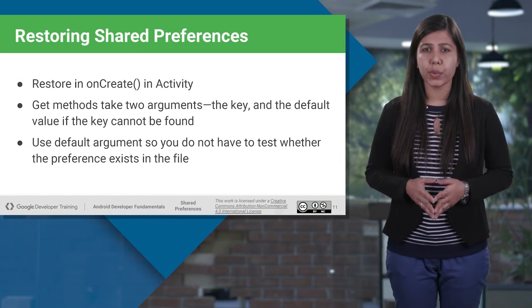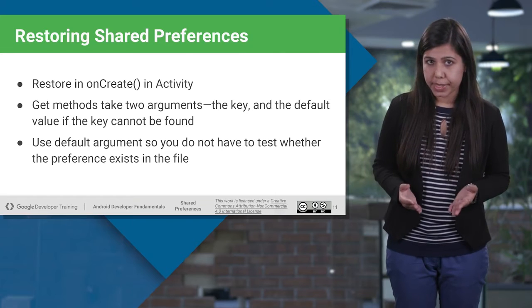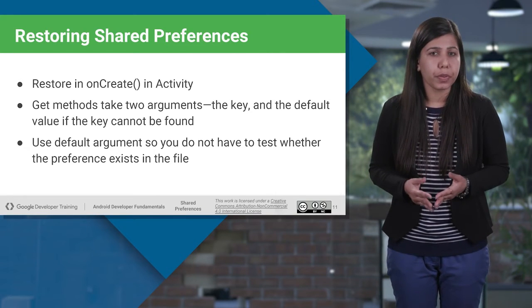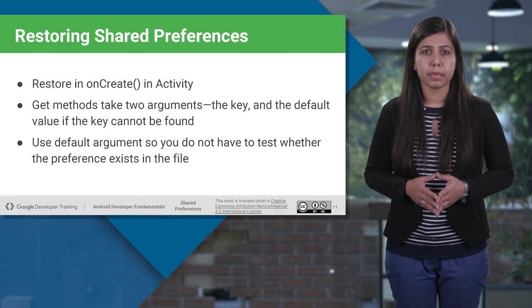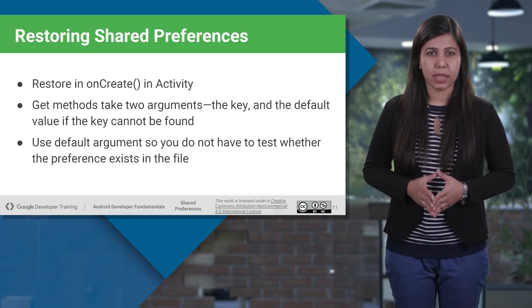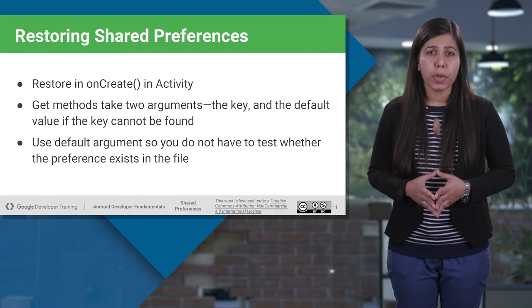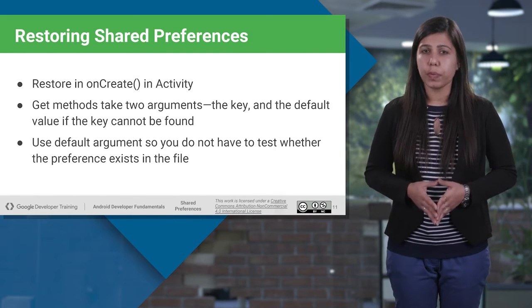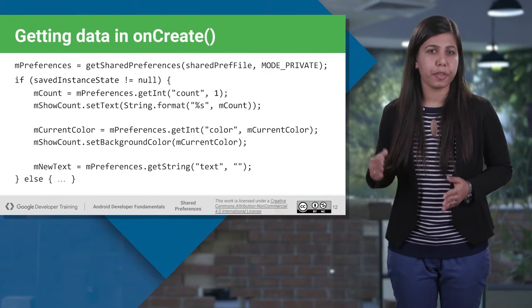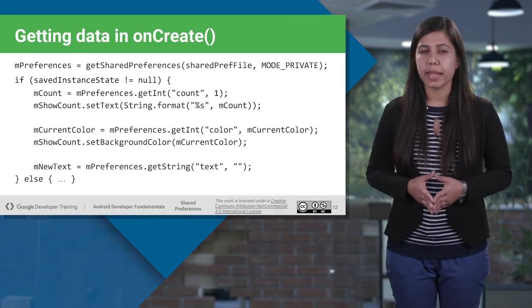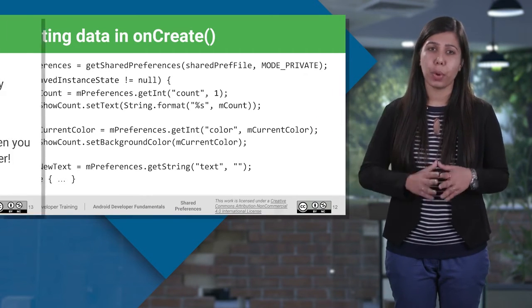To restore values in onCreate of the activity, use methods such as getSharedPreferences or getInt on SharedPreferences to get access to the preferences stored in the file. The get method will take two arguments: the key and the default value. In case the key is not found, the default argument value will be used, so we don't have to test whether preferences exist in the file. Use the getSharedPreferences method — this gets the shared preferences from a specified file, and this is how we read the values from it.